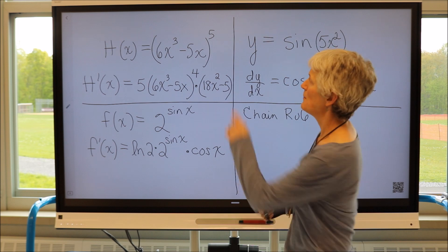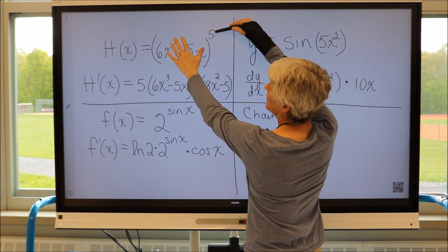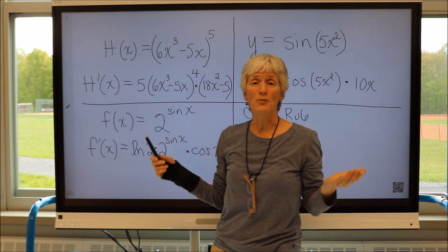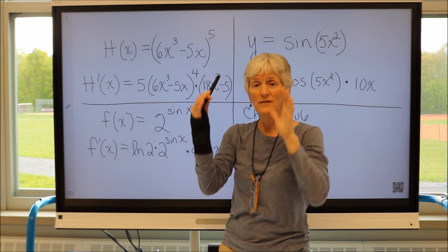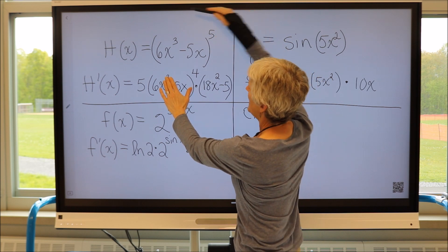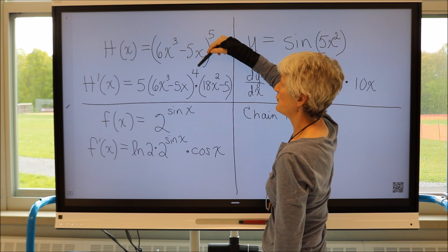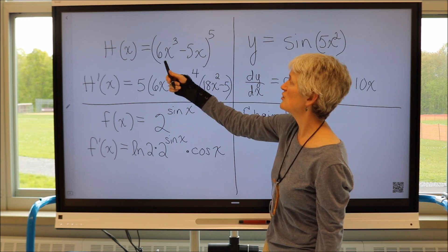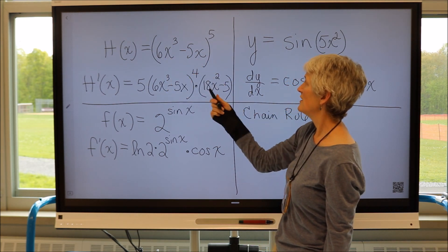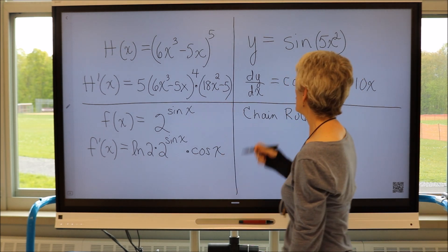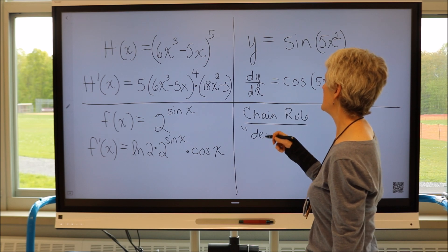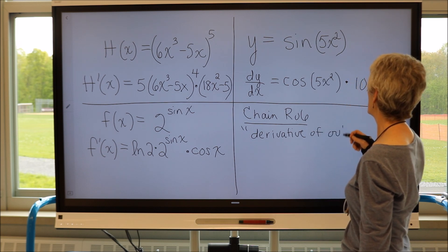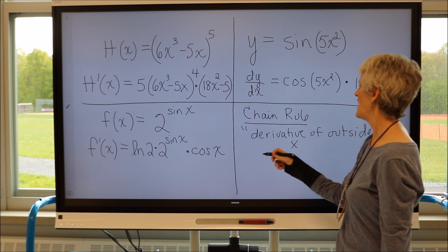So if I think of my original composition here, my outside function was something raised to the fifth. I'm taking the derivative of something raised to the fifth — I used the power rule to figure out the derivative of something raised to the fifth. I did 5 times that as it is raised to the fourth. That's like a big power rule. Then times the derivative of the inside function — the derivative of 6x cubed minus 5x is 18x minus 5. So the chain rule is often described as the derivative of the outside function times the derivative of the inside function.